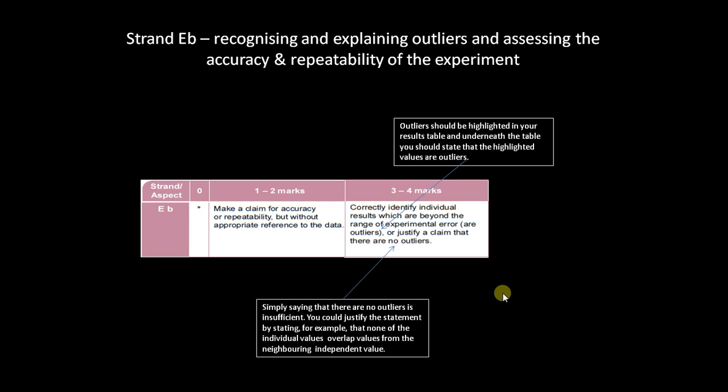You must also identify all the outliers. Just identifying one or two and then not bothering with the rest is going to limit you to low marks. Also, simply saying that there are no outliers is insufficient. If you can justify the statement, so for example by saying that all your individual repeat values don't overlap the individual repeat values from neighbouring independent readings, then that's fine. You have justified the fact that there doesn't appear to be any outliers.